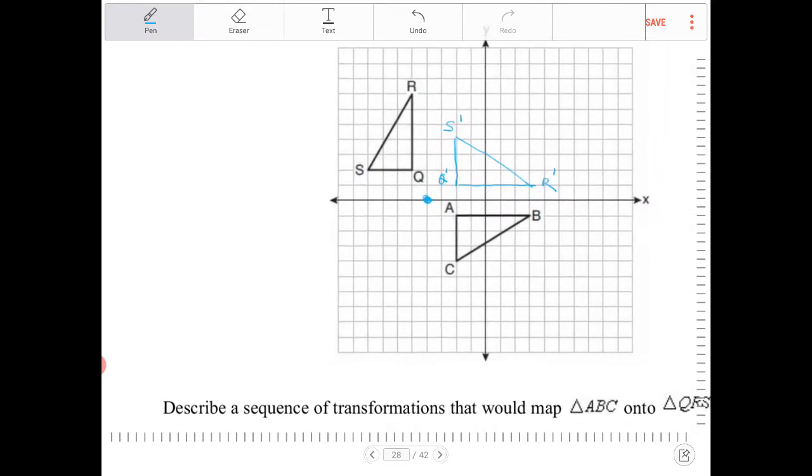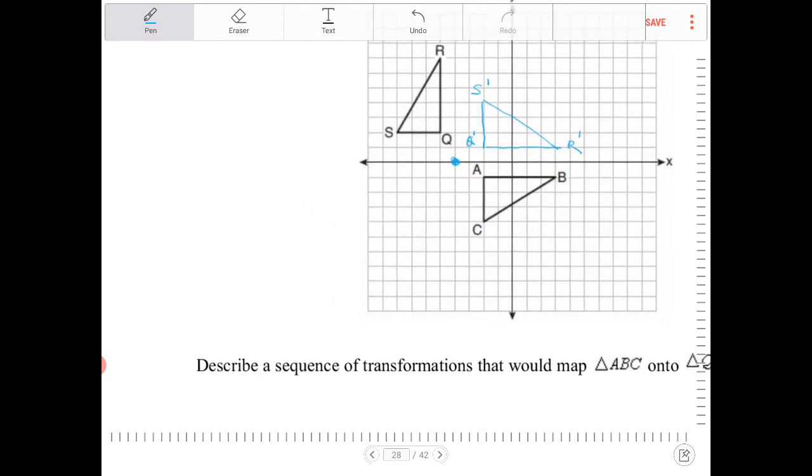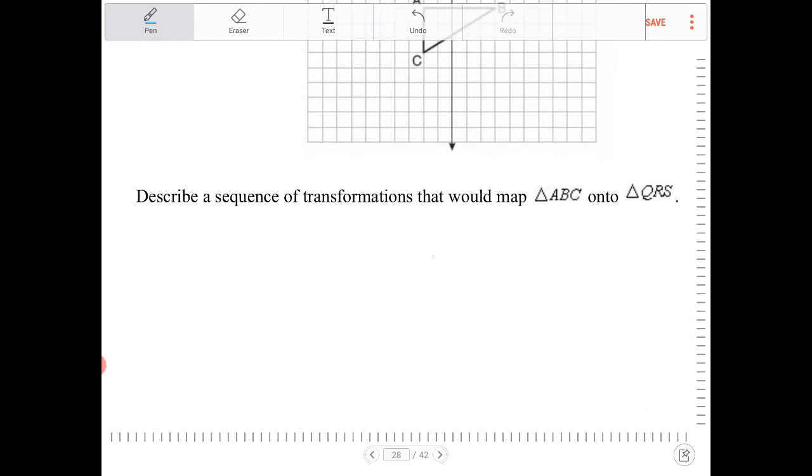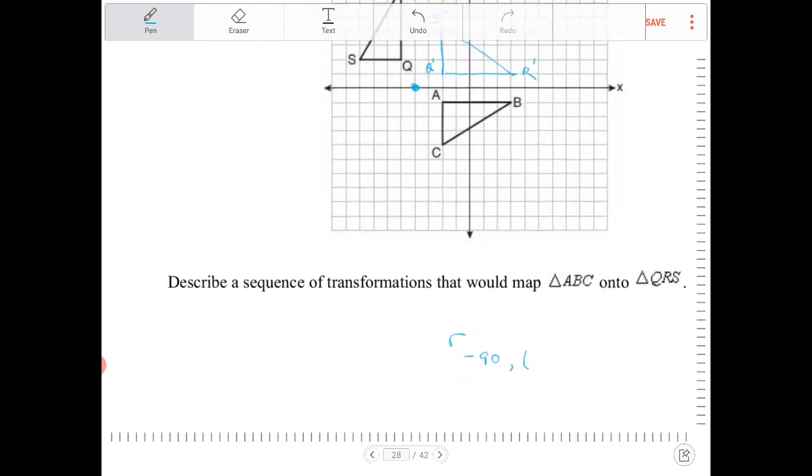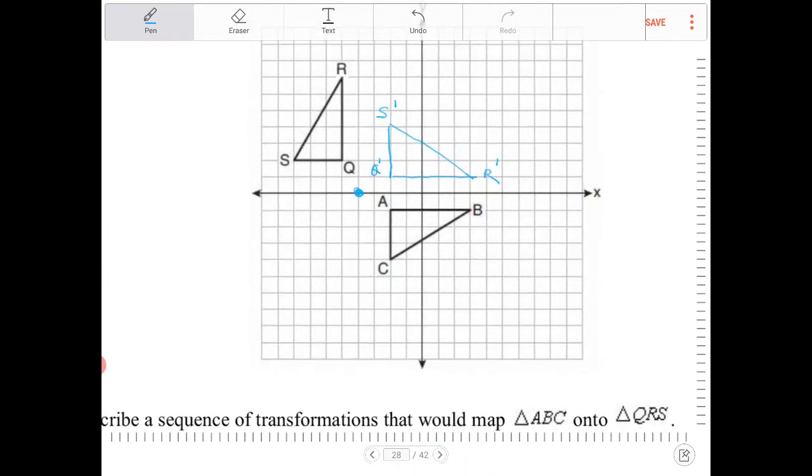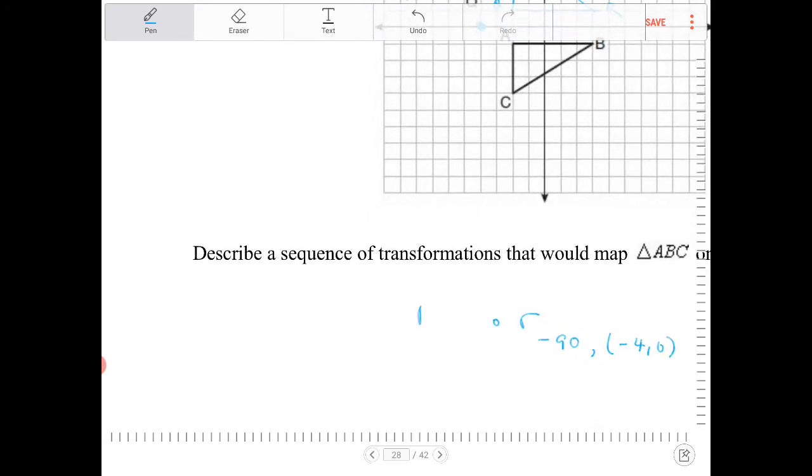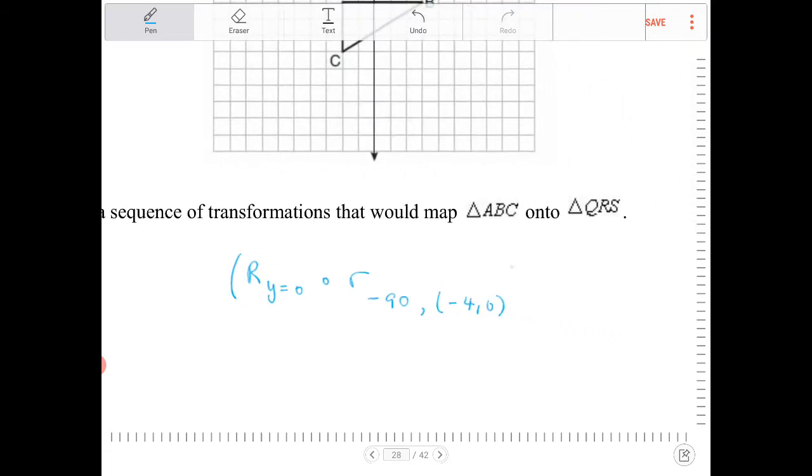All right, so what is the transformation then? We're going to perform a rotation, so we're going to rotate negative 90 degrees over the coordinate of (-4, 0), and followed by a reflection over the x-axis. So reflecting over y equals 0 of triangle ABC.